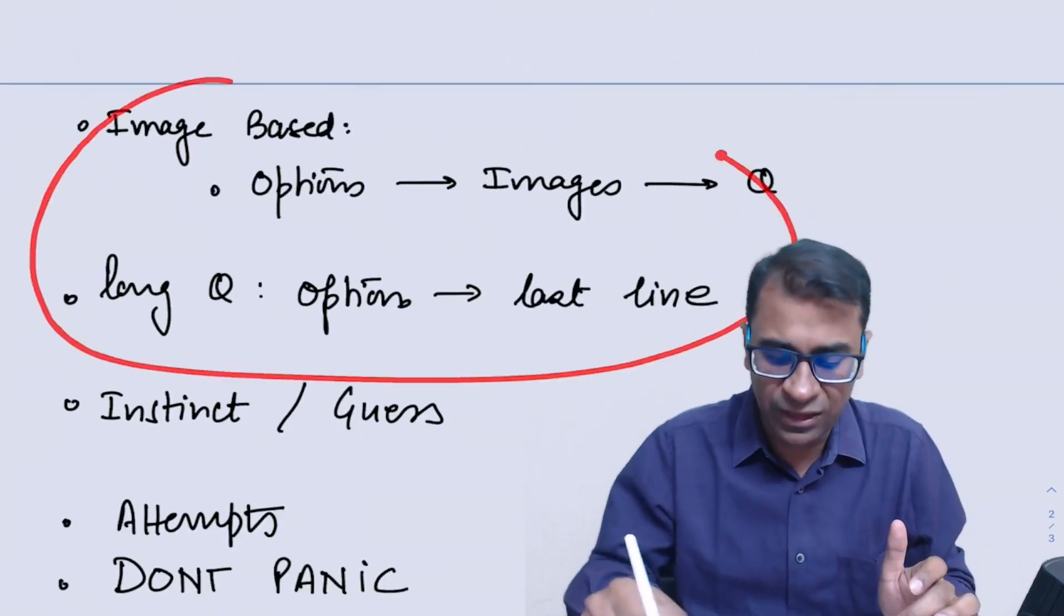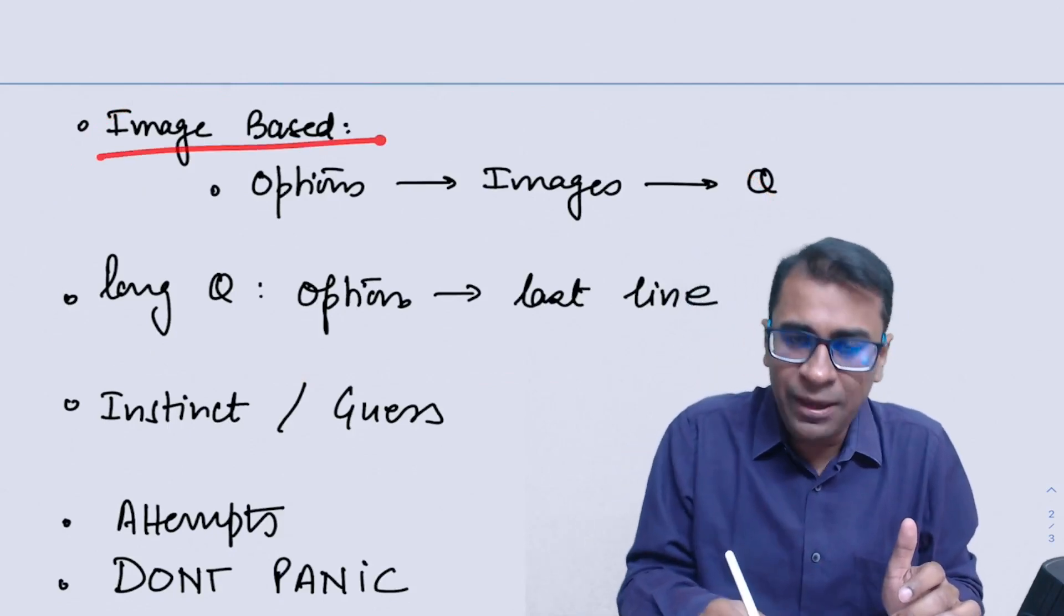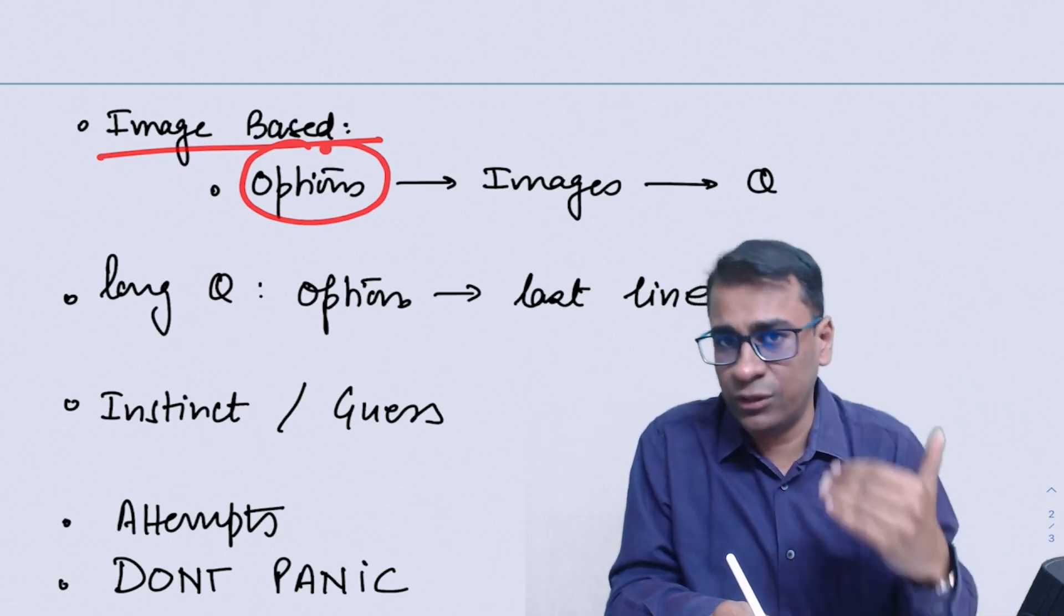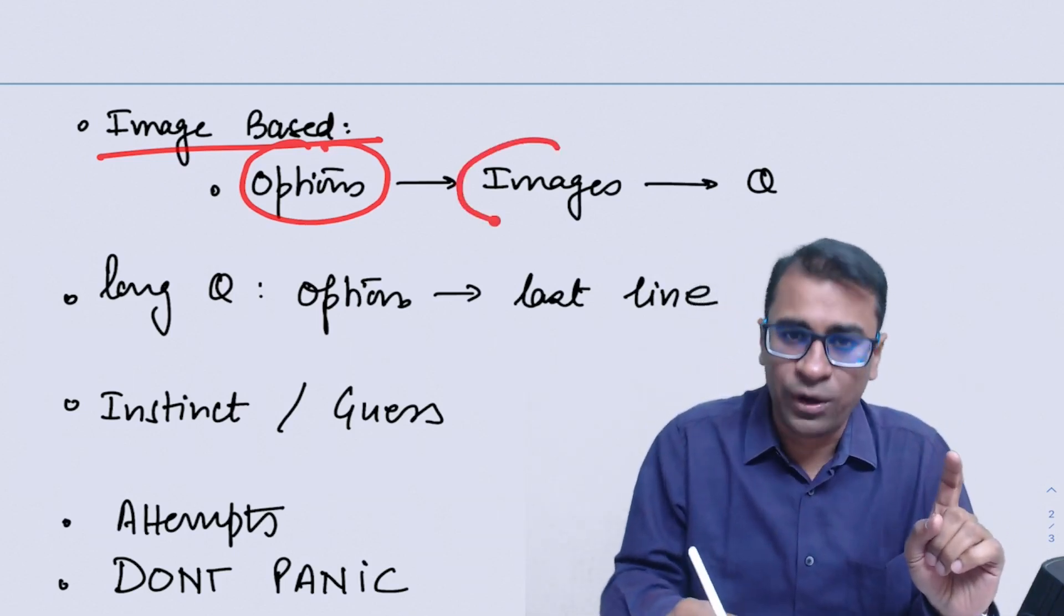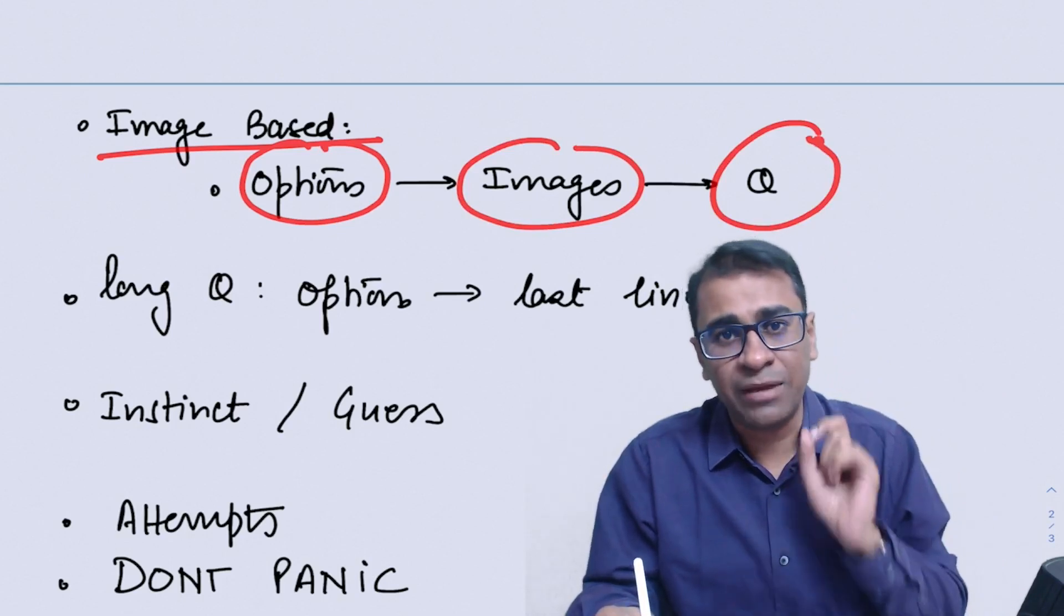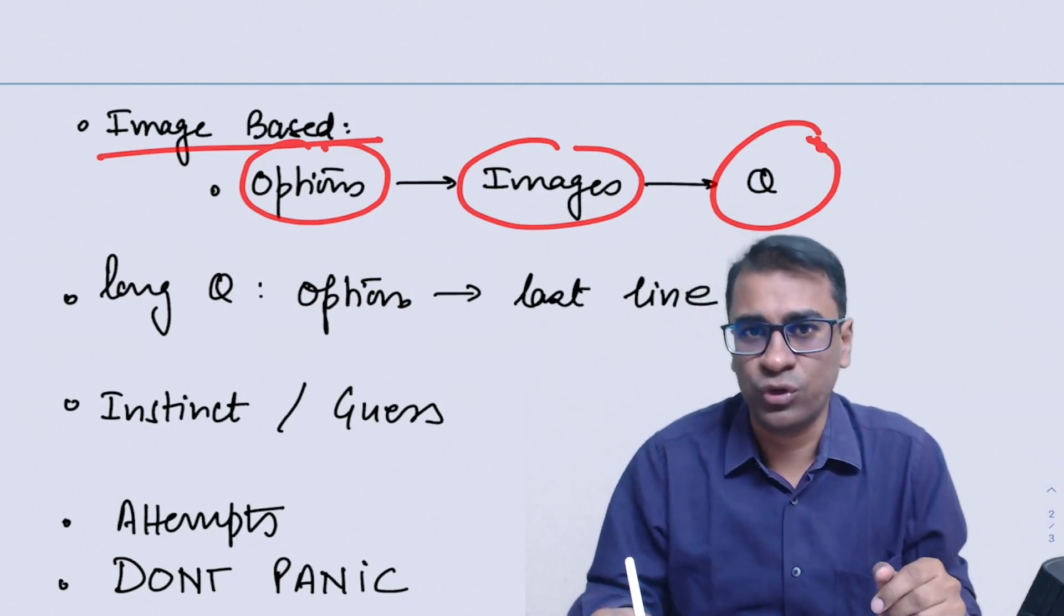Now about how to solve the image based questions, how to solve the long questions in my exam. For the image based questions, first look at the options. You have an idea as to what the image is trying to tell you. After looking at the options, look at the image. And then look at the question. It really saves a lot of time. And maybe you can get a right answer even by looking at the image, not even looking at the above question.